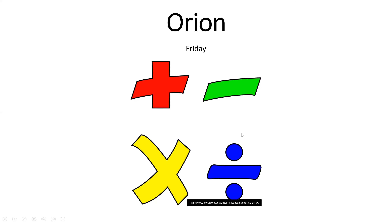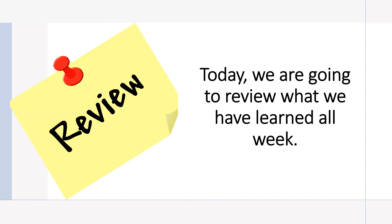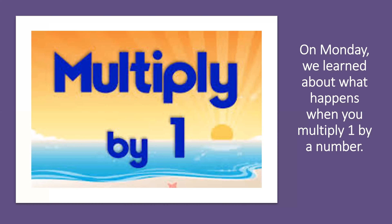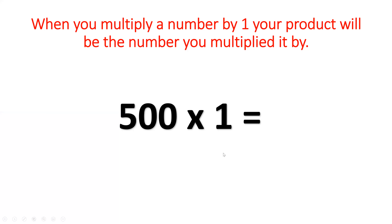Hey Orion, happy Friday. Today we're going to review what we have learned all week. On Monday, we learned about what happens when you multiply one by a number. So 500 times one equals 500. When you multiply a number by one, your product will be the number you multiply by.